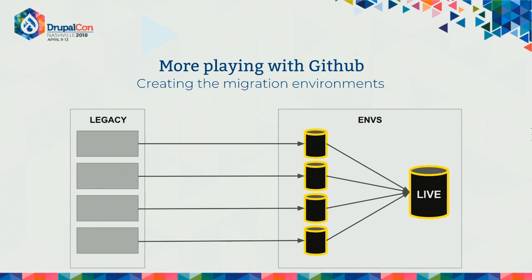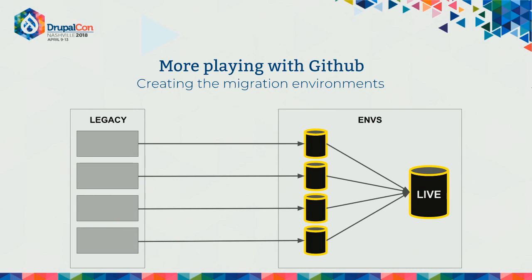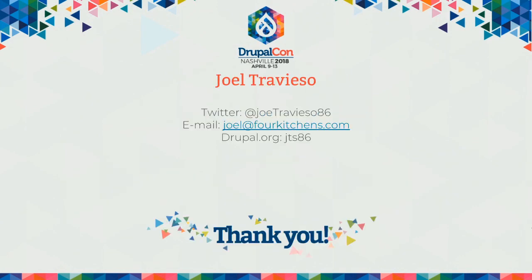That's all the ideas I have for you today. The bottom line is sparking ideas about how much we can automate and how much time and effort we can save on a daily basis by automating all the things. I invite you to join us in the contribution sprints on Friday, fill out the survey, and reach out to me. I'll be at the Four Kitchens booth or reachable online at those endpoints. Thank you very much.